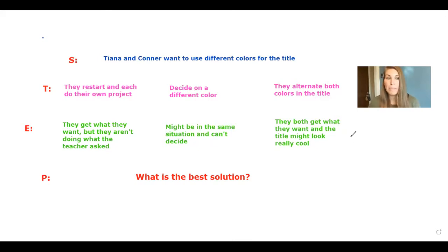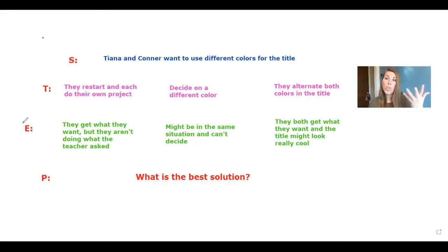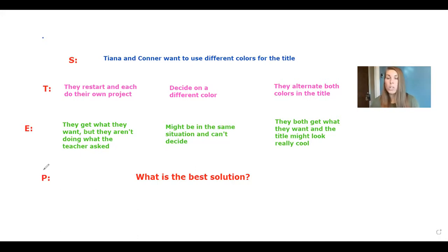So we S said the problem without blame, T thought of three different solutions — remember, there could be a lot more, we're just picking three — and E explored the consequences, what can happen if they choose any of those decisions, what's good, what's not so good, and how are they going to feel. The last step is P — pick the best solution. The best solution is the one that's going to make both Connor and Tiana as happy as they can be, something that's fair for both of them. Now we have two more videos to watch where we'll see Connor and Tiana do exactly what we just did.